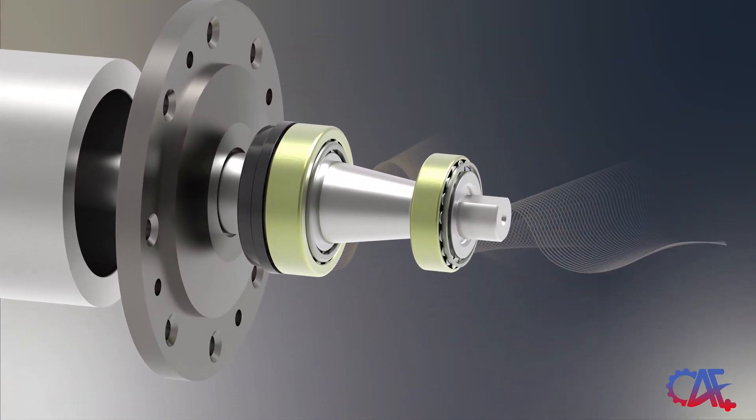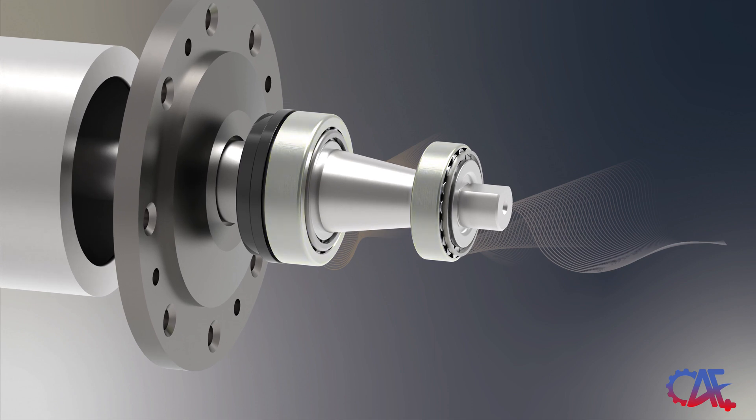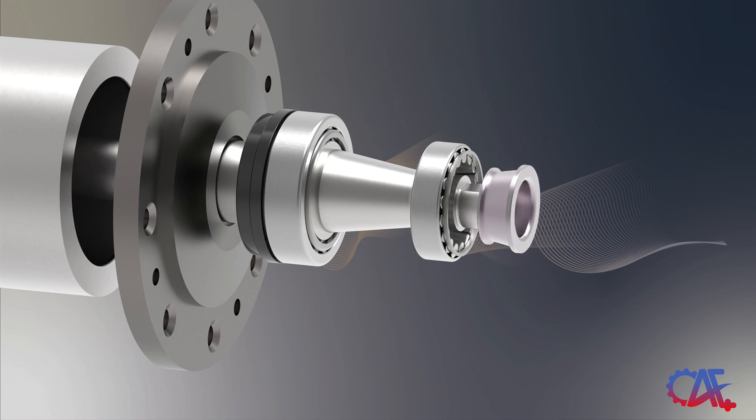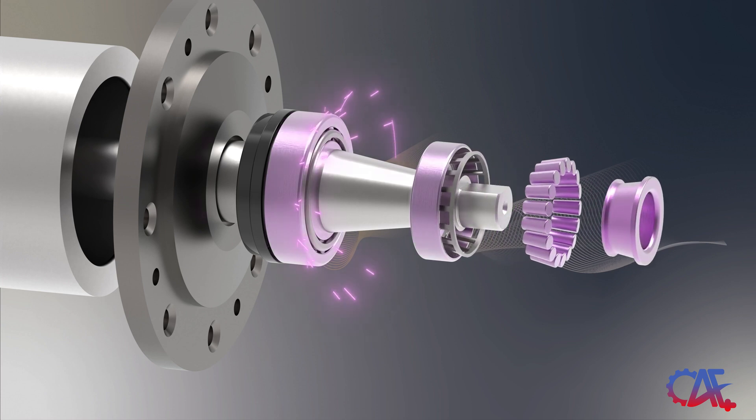In addition, the back-to-back arrangement enhances durability and life by distributing the load and achieves smoother operation under heavier radial loads on the tapered roller bearings, as indicated by the green arrows. Furthermore, this setup boosts the rigidity of the system and assists the bearings in handling larger combined loads, as illustrated by the purple arrows.